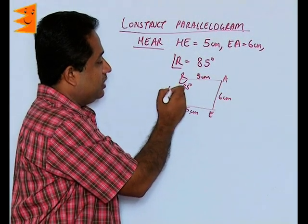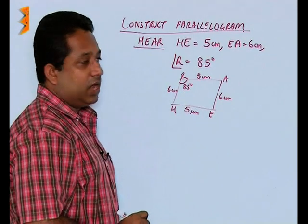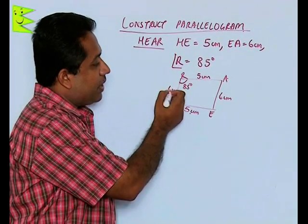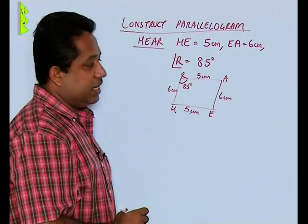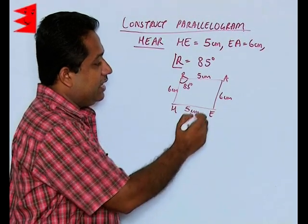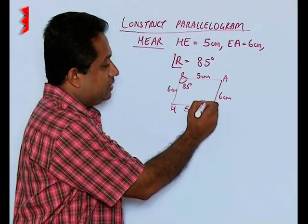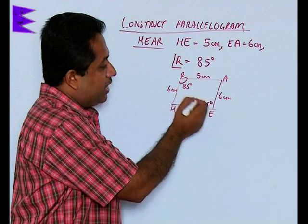Since it is a parallelogram, we know that opposite angles are equal, so we can say that angle E will also be 85 degrees. And we can find out the other angles.